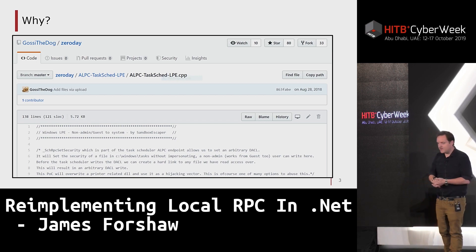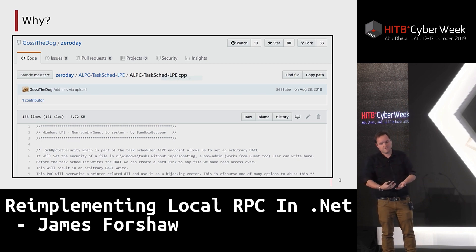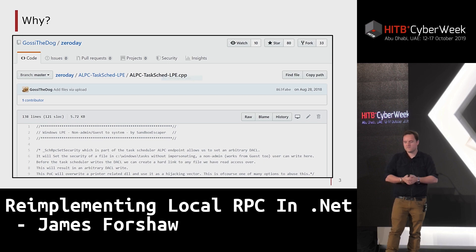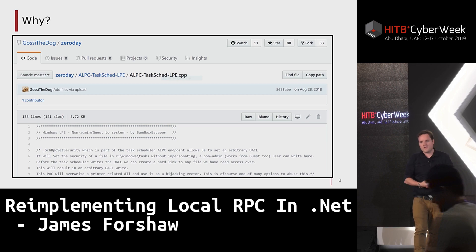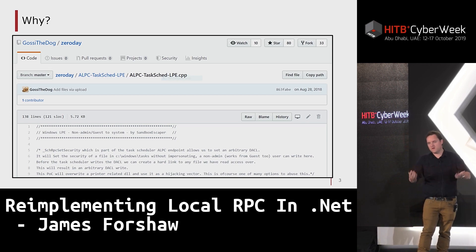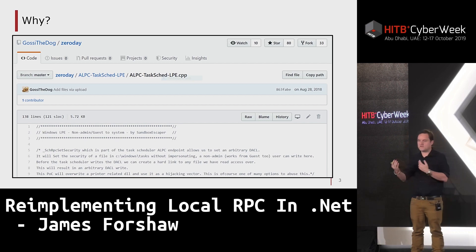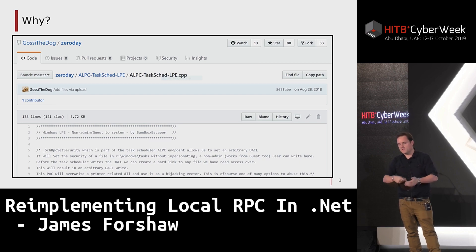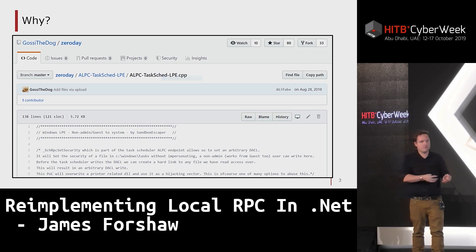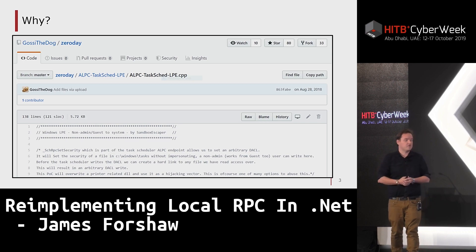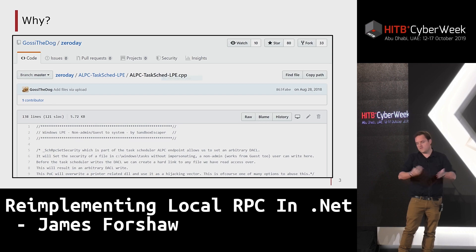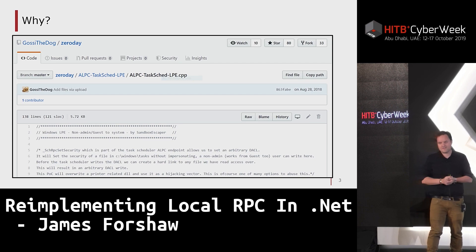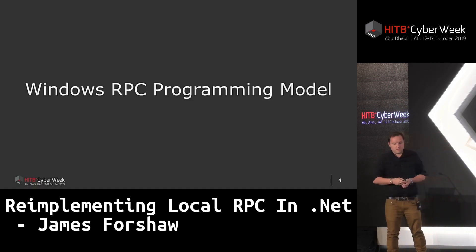RPC services are a useful mechanism to do privilege separation on Windows. You write your system service running as a high-privilege user, but you want to provide access to those services to lower-privilege users. Windows provides a built-in mechanism — this RPC mechanism — to do remote procedure calls or inter-procedure calls between two different processes on the same system. They're all securable and can be exposed safely, but if the code itself is unsafe you can find security vulnerabilities leading to elevation of privilege or even remote code execution.